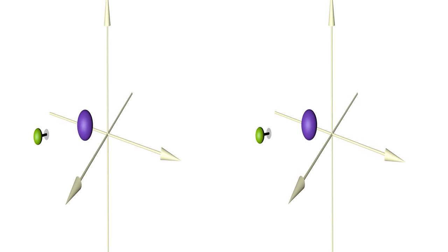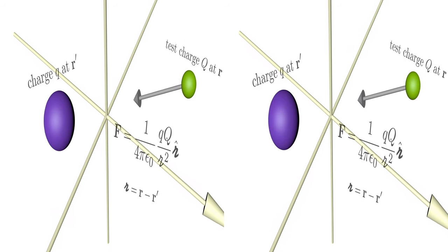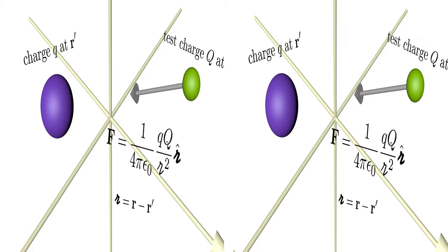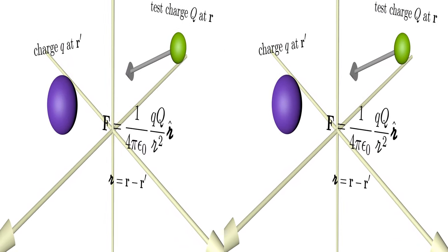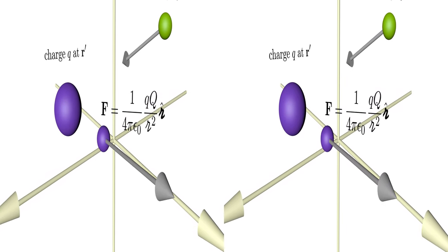Coulomb's law is an experimentally verified law that lies at the basis of electrostatics. It basically tells you that the force on a test charge due to a point charge q at some point in space is inversely proportional to the square of the distance and, dependent on the sign of the charges, is either directed towards or away from the point charge.